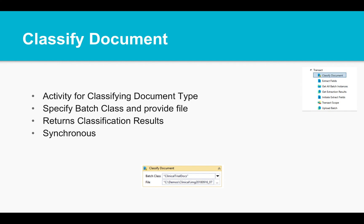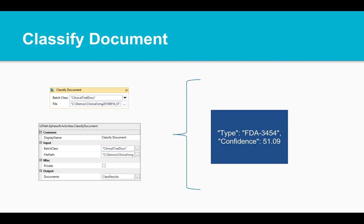EFASOFT can classify the document, and this allows robots to know what type they are processing. The Classify Document activity returns the document type in a web service response and is an asynchronous service call. Specify the batch class and file name, and the output will be placed into a list.